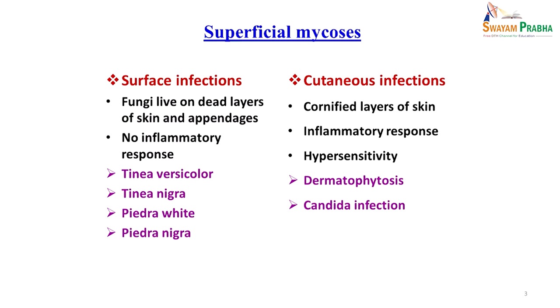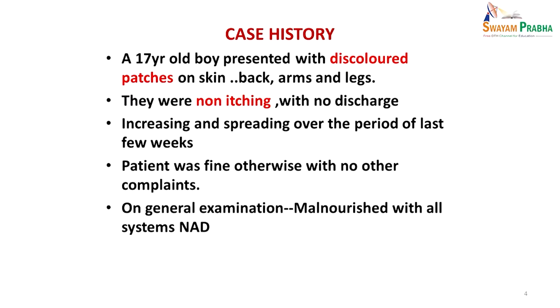Before going into details, we will see a few cases which might help you understand how we come across these patients and how we diagnose them. There was a patient, a seventeen-year-old boy, who presented with discolored patches on skin — on the back, arms and legs. These patches were not causing any problem as such; they were just a cosmetic problem. He saw that they were progressing — starting over a small area and spreading over the last few weeks. They were non-itching and there was no discharge.